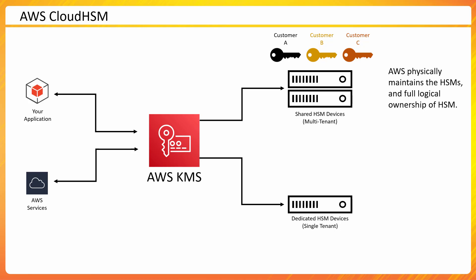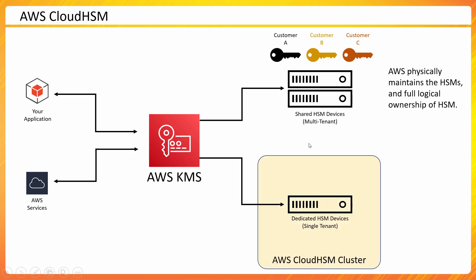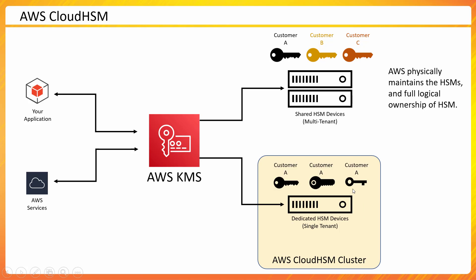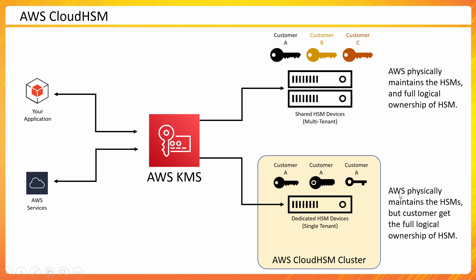A single-tenant HSM device allows only one tenant to use that particular device. It is created as a logical component called an AWS Cloud HSM cluster. Once this Cloud HSM cluster is ready, you may have one HSM device or up to 32 HSM devices inside it. They would be single-tenant, hosting keys from one single customer — though spanning across multiple accounts is completely possible.